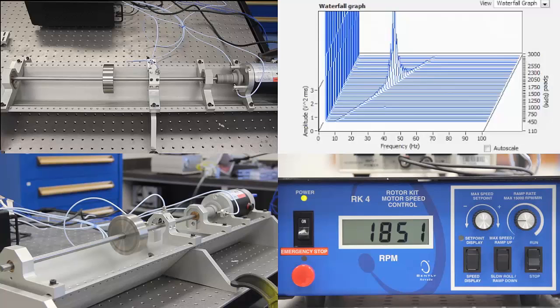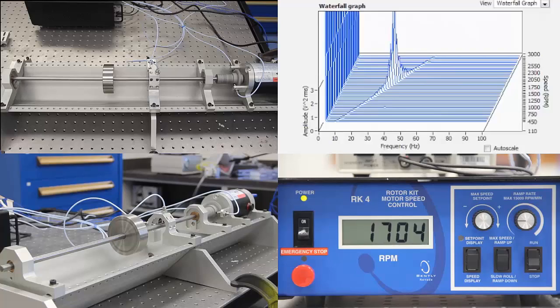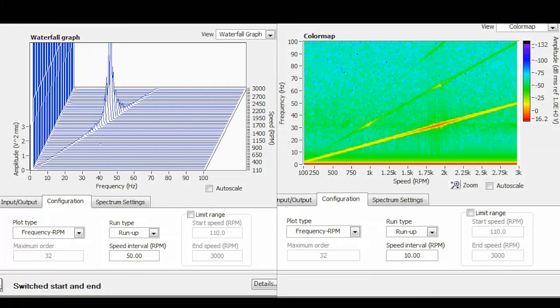Once the experiment is complete, the frequency response corresponding to each speed can be represented in the waterfall plot or color map plots for further analysis. As you will notice, both waterfall plot and color map plot provide the same information.